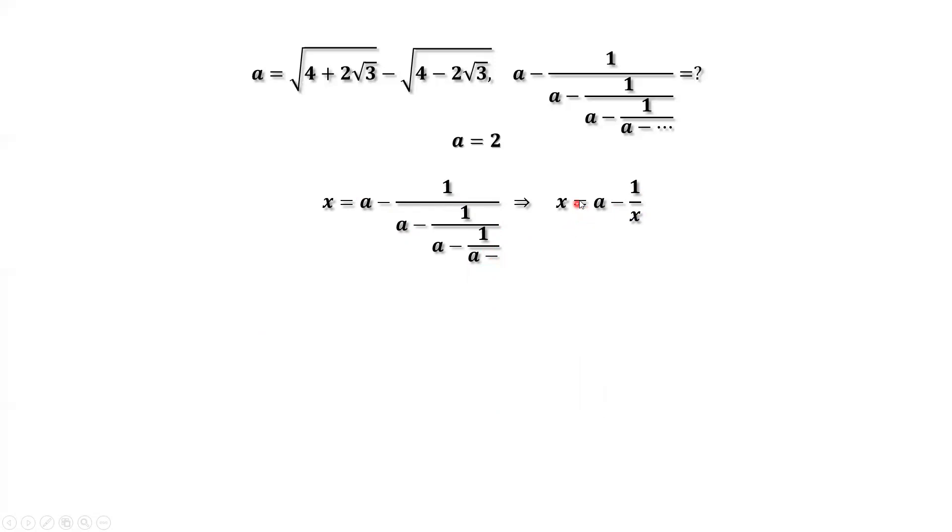In this equation, we replace a by 2. Then we have x equals 2 minus 1 over x. Both sides times x. We can cancel this denominator in the right-hand side. x squared equals 2x minus 1. Move everything to the left-hand side. We have this quadratic equation.